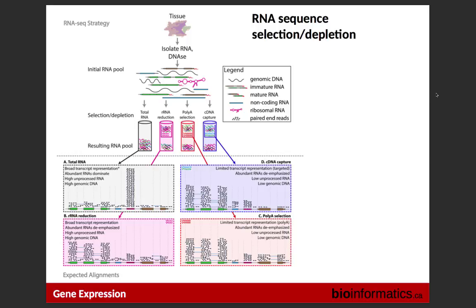Once you confirm RNA quality is good, you move to preparing your RNA-seq library. There are many different protocols to choose from, depending on what you plan to do afterward. Since 80% of RNA is ribosomal, your total pool includes tRNA, mRNA, rRNA, and others. If you want only the coding portion, there are two techniques: ribosomal depletion — getting rid of ribosomal RNA — or polyA selection — selecting only what you're interested in. Each results in an RNA-seq library specific to your goals.